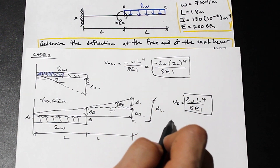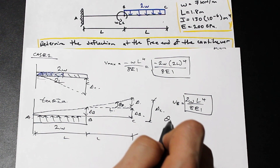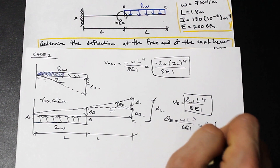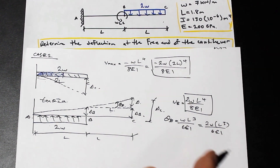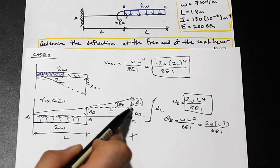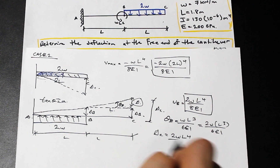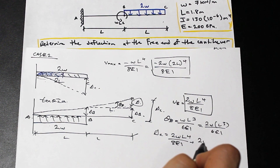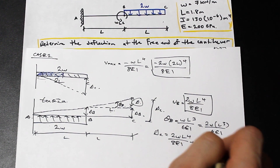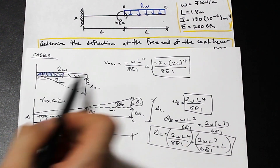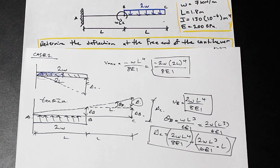The additional deflection delta at C (beyond B) equals the angle of rotation theta B times L. Looking at the formula for angle of rotation at B from Case 2, it's WL³ over 6EI — and it's positive because it's counterclockwise. Plugging in: theta B = 2WL³ over 6EI. Multiplying by L gives the extra deflection. Adding delta B and this term together gives us the total deflection at C due to this loading case for the uniformly distributed load.